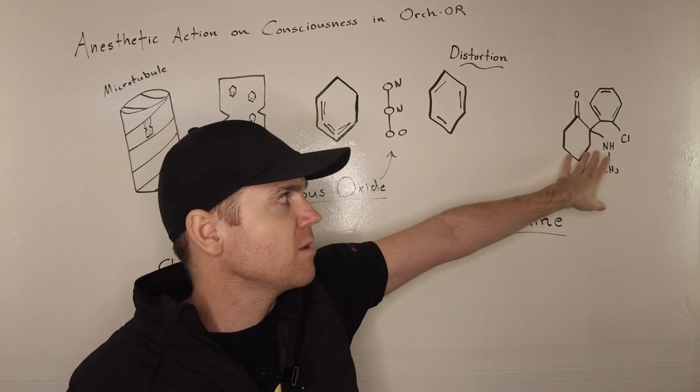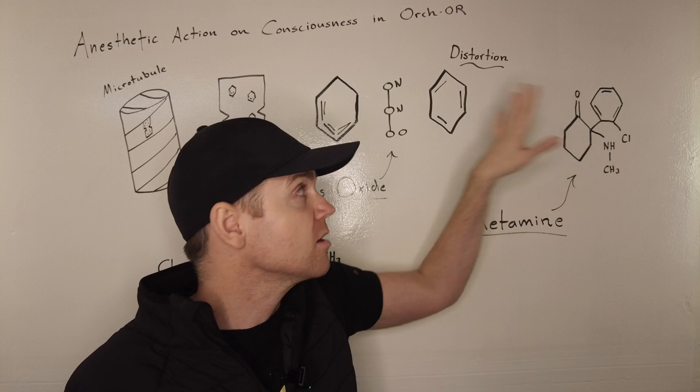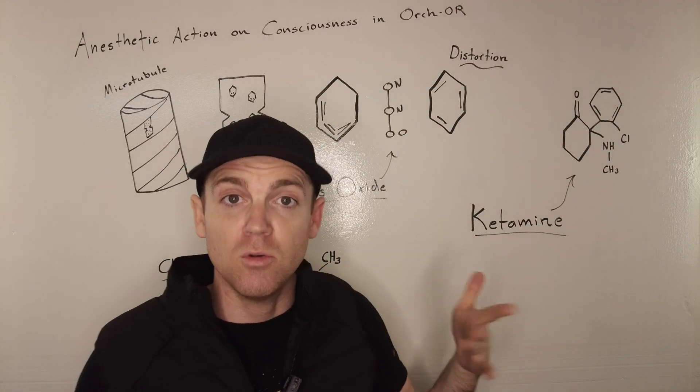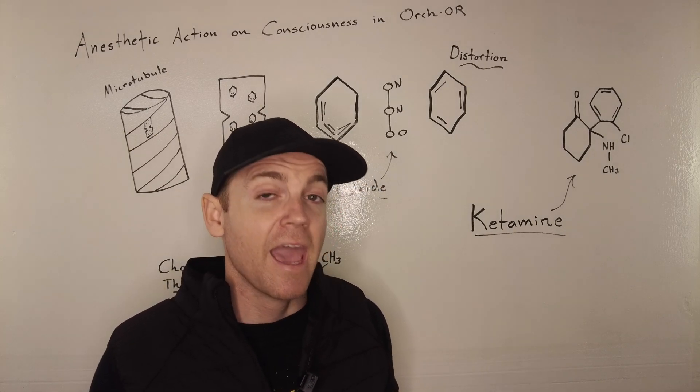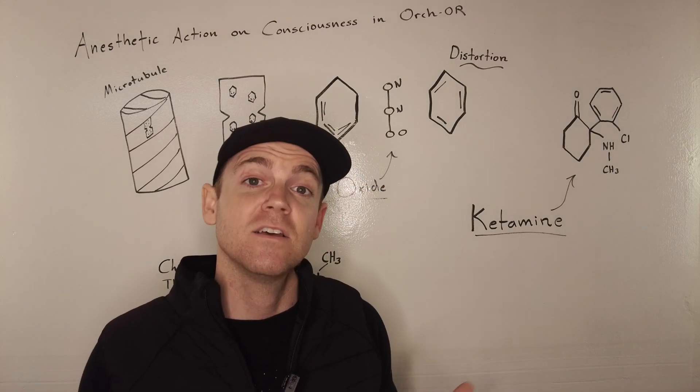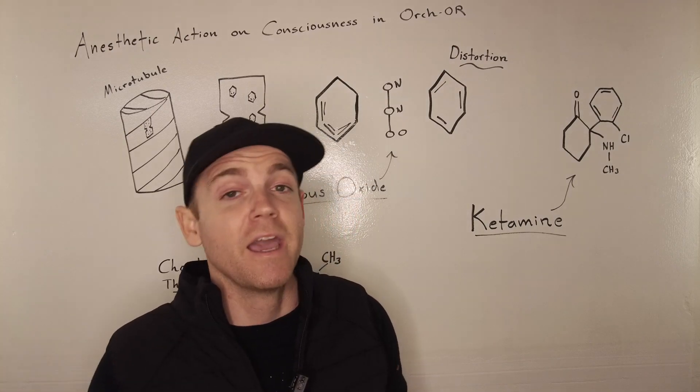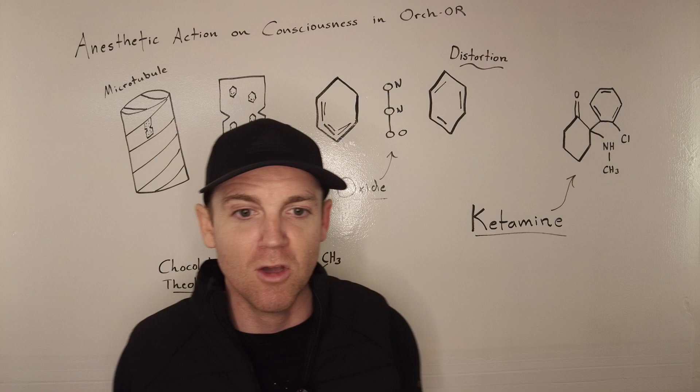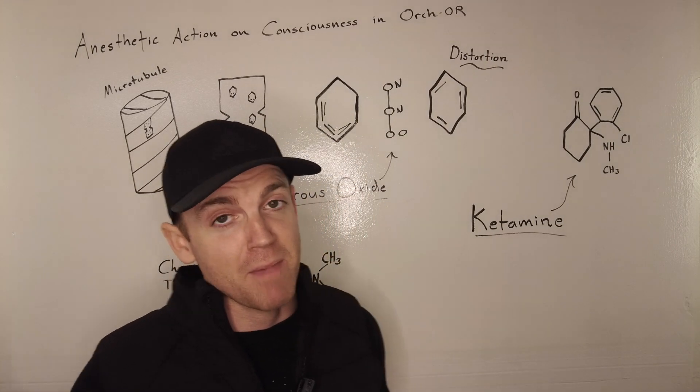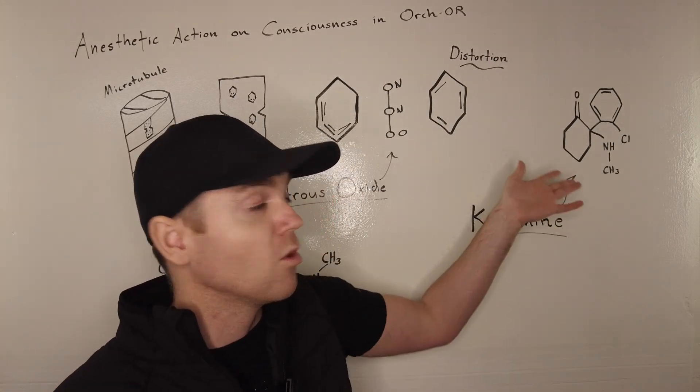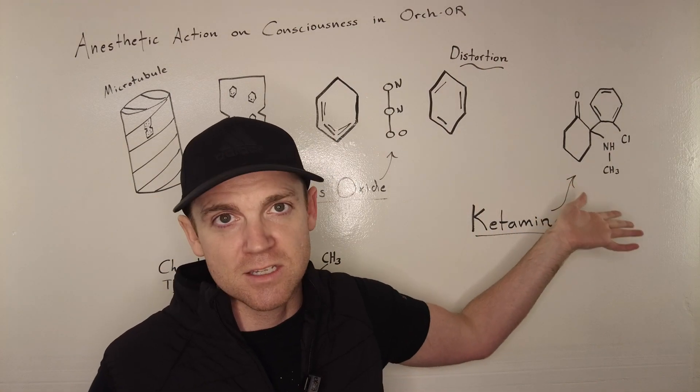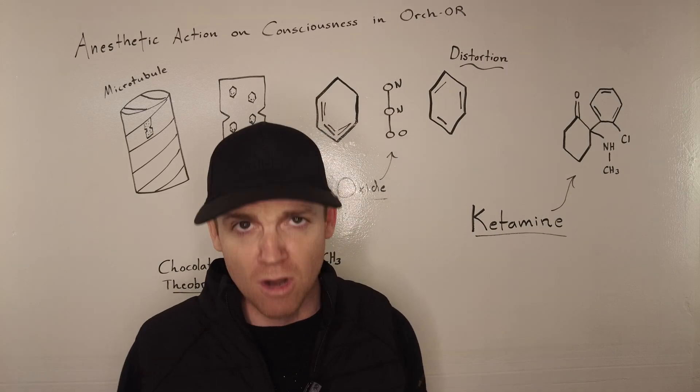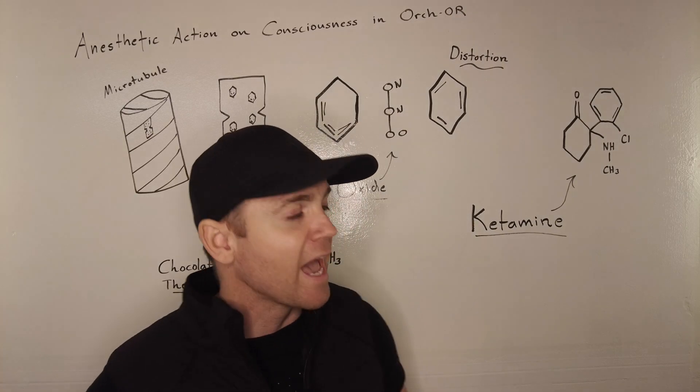So ketamine has that unique feature, very similar to nitrous oxide. Now ketamine at low doses is slightly hallucinogenic. At higher doses can cause almost complete dissociation, and at a high enough dosages with any of these chemicals, well, maybe not theobromine and chocolate, I don't really know what the maximum dosage is, but will cause a loss of consciousness or basically a dissociated state where you're no longer conscious. So they have those similarities.